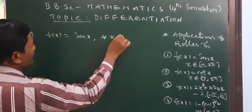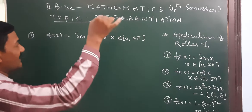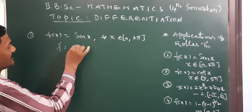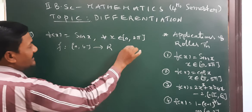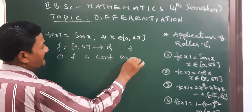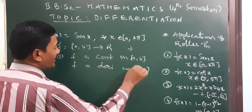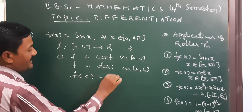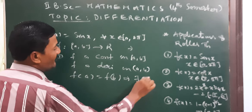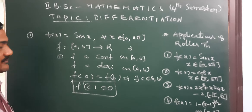Question number one: suppose f(x) = sin(x) for all x belonging to [0, 2π]. What is Rolle's Theorem? F from closed interval [a, b] to ℝ is a function such that: first, f is continuous on closed interval [a, b]; second, f is derivable on open interval (a, b); and third, f(a) = f(b). Then there exists c in open interval (a, b) such that f'(c) = 0. This is the ultimate result of Rolle's Theorem.